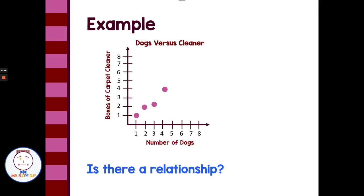The title is dogs versus cleaner, and we have two variables being compared. We have number of dogs along the x-axis and boxes of carpet cleaner used each month along the y-axis. We can see there's a person with one dog that uses one box of carpet cleaner a month, a person with two dogs using two boxes, three dogs using a little bit more than two boxes, and four dogs using four boxes of carpet cleaner.